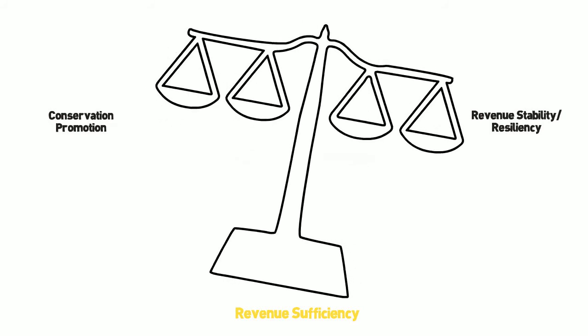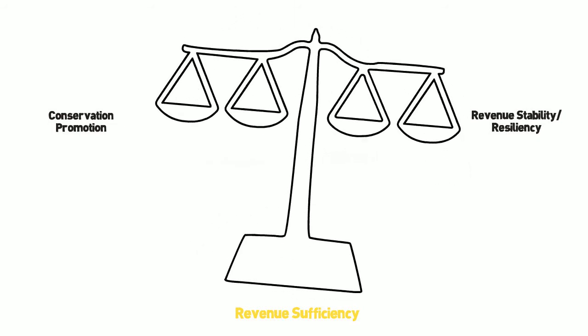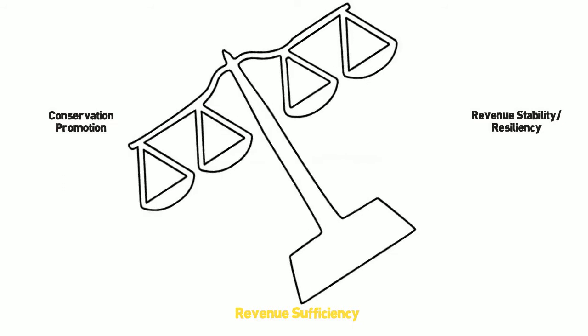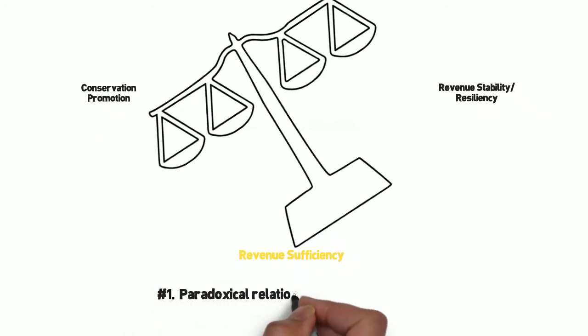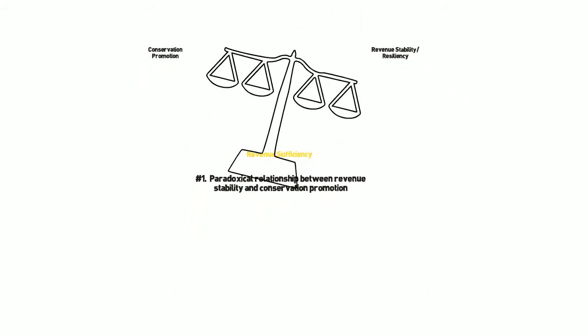One common conflict is the tension that arises between promoting water conservation and ensuring a stable revenue stream to cover the predominantly fixed costs of running a water utility. Utilities can and have set relatively low base charges and high volumetric rates to send a price signal to customers to use less water. But this model reduces the fixed revenues that the utility can generate, relying more on variable revenues — variable revenues that are vulnerable to decline as customers use less water. Because the majority of utilities' revenues are generated from sales, there is a paradoxical relationship between revenue stability and conservation promotion. This is the first of four reasons why the water industry might want to consider a new business model.